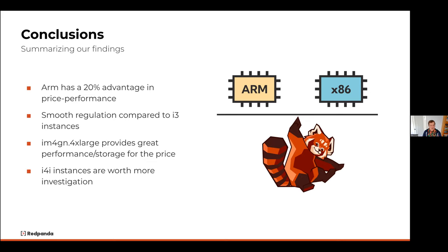In conclusion: ARM instances have that 20% advantage in price performance. We see smoother regulation on smaller instances. For smaller instances, running with ARM processors is absolutely a great way to go — more predictable performance and a pretty good price-to-performance ratio. The IM4GN 4xlarge provides a great price-performance comparison for end-to-end latency. The I4I instances are still relatively new and worth more investigation, but there are concerns that there's not enough network bandwidth to fully drive the IO available on those systems.